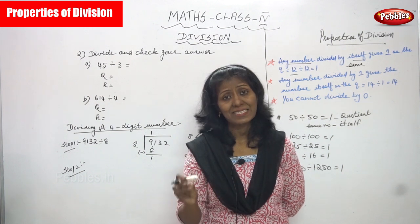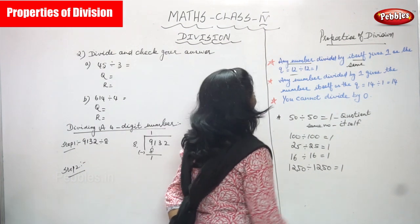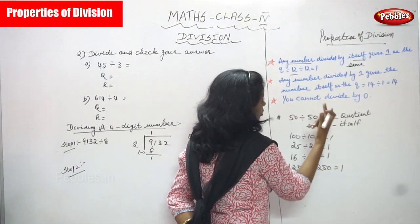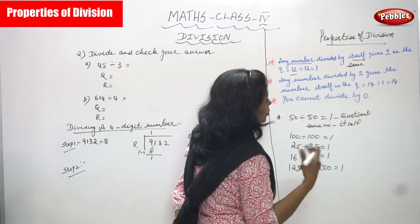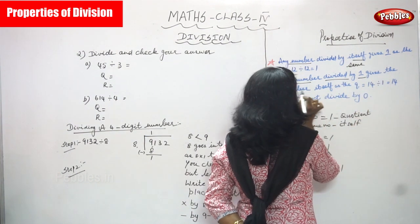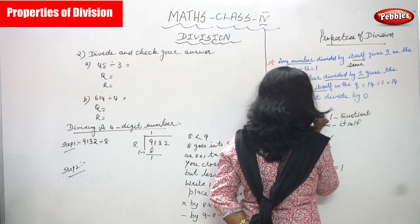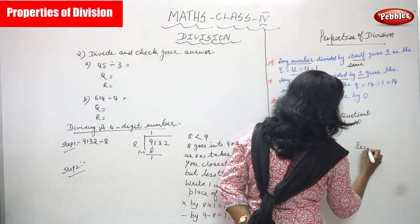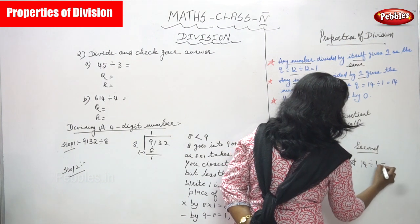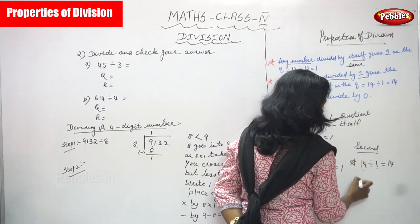Next, the second property: any number divided by 1 gives the number itself as the quotient. That is different from the first property. For example, 14 divided by 1 gives 14. Any number divided by 1 gives the same number itself.